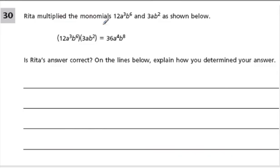Okay, we need to multiply the monomials, that's this, one term connected by multiplication, and 3ab squared as shown below. Is her answer correct? Okay, well, we know that we're going to group things that are friendly with each other, like terms, and 12 times 3 is 36. Great. a to the third times a, we're going to add those exponents, that's a to the fourth. Great. And b to the sixth times, okay, this is correct.